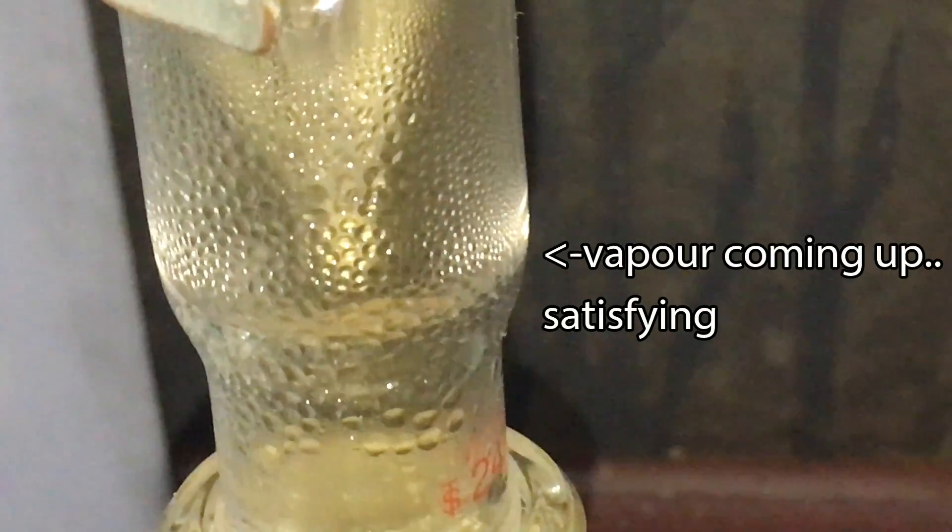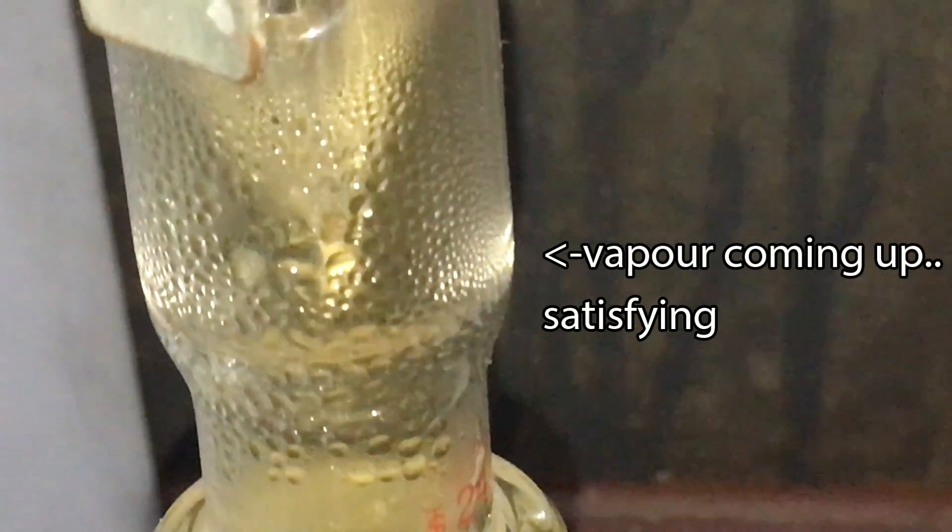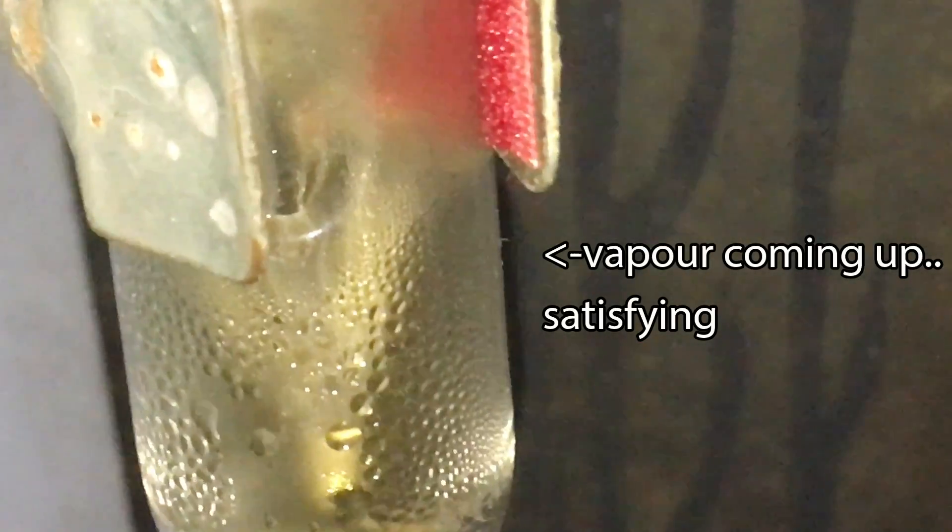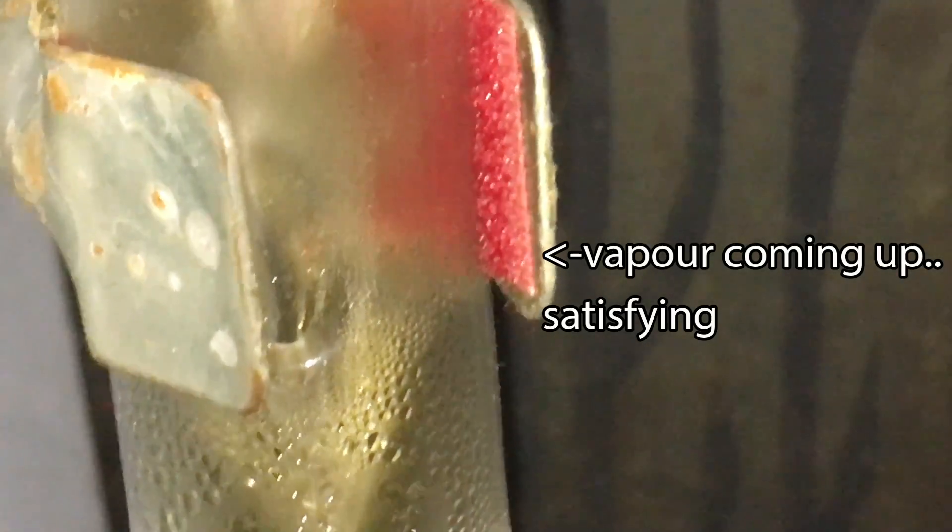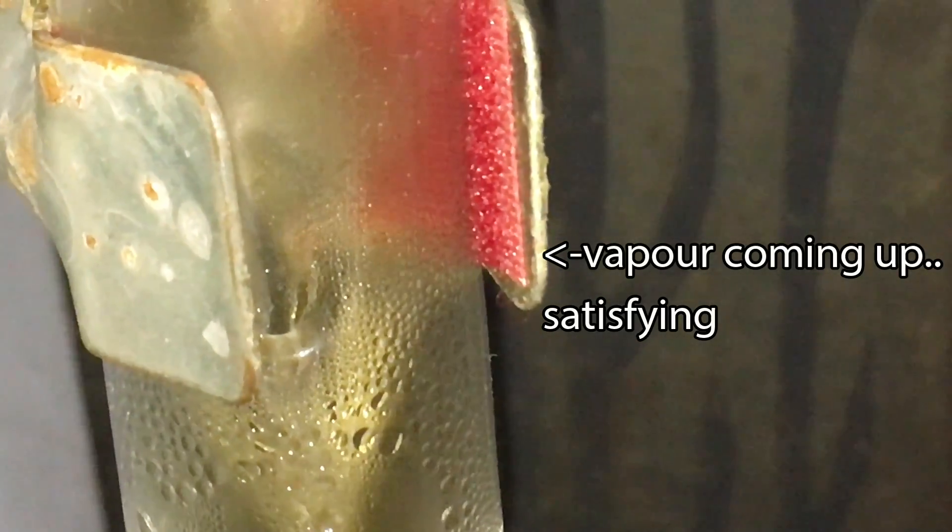As you can see, some yellow gas is formed. It is expected and is nitrogen dioxide gas. As toxic nitrogen dioxide gas is evolved, please perform this experiment inside a fume hood or in a well-ventilated area.